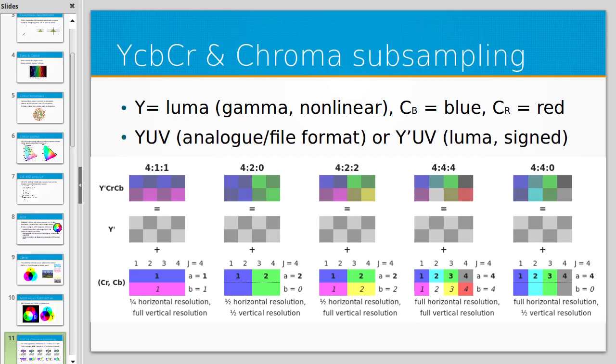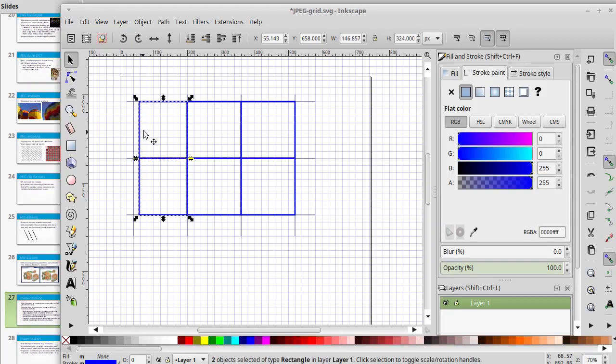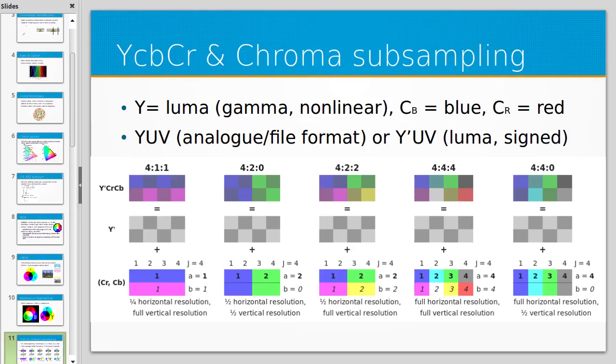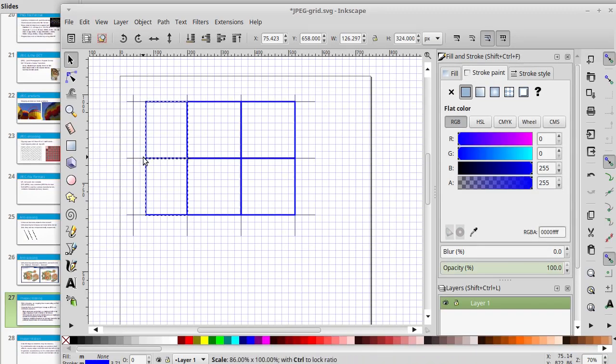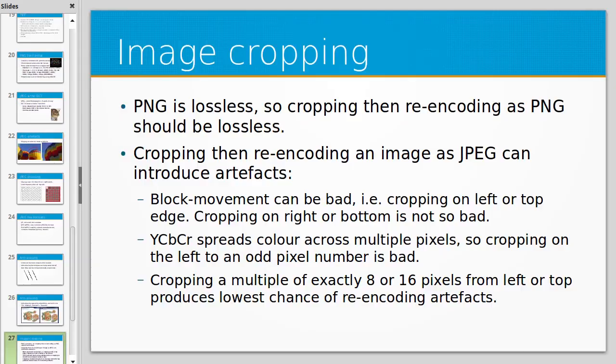YCbCr, that chroma subsampling that I talked about, it spreads color across multiple pixels. So if you crop on the left to an odd pixel number then you will tend to re-average colors that were already averaged. So you'll actually lose more color information if you crop on the left to an odd pixel number than if you crop on the left to an even pixel number. And in some of those chroma subsampling cases you might want to crop on a multiple of four pixels because that would actually be more efficient in that case.